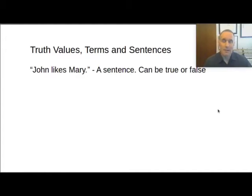So what's the difference between a truth value, a term, and a sentence? John likes Mary is a sentence, and it has a truth value. It can be either true or false. Either John likes Mary or he doesn't, at least in a simplified classical logic interpretation.